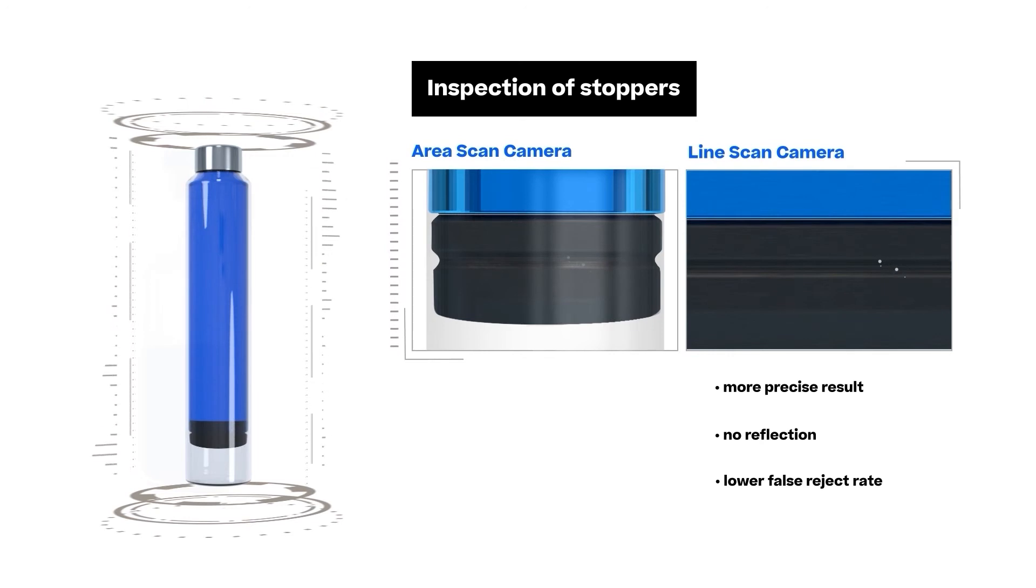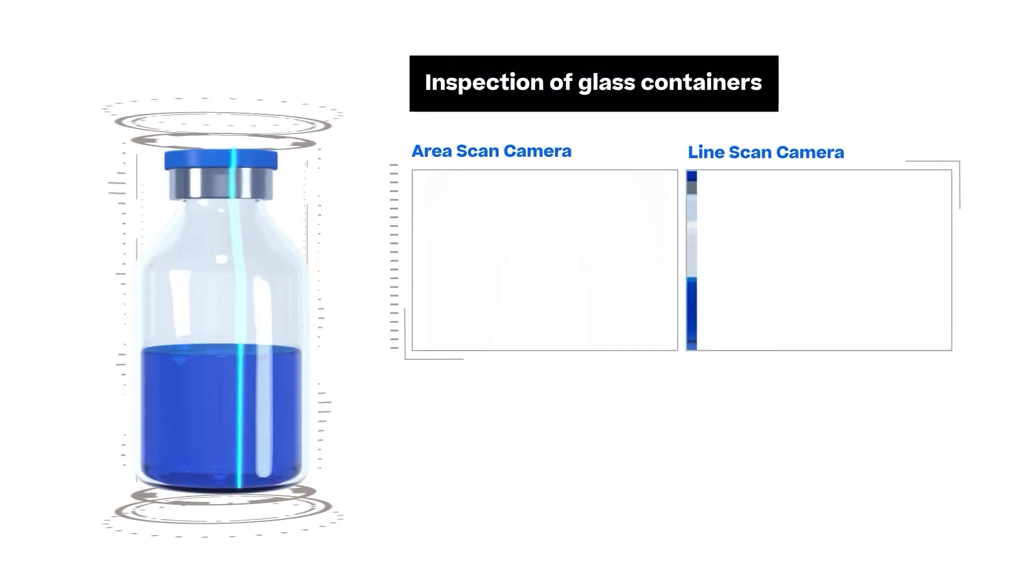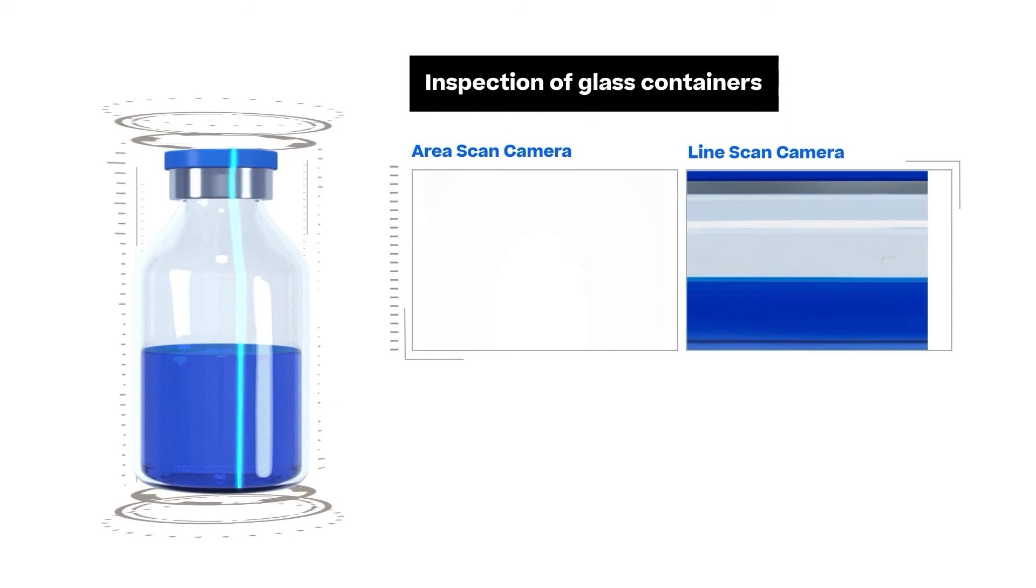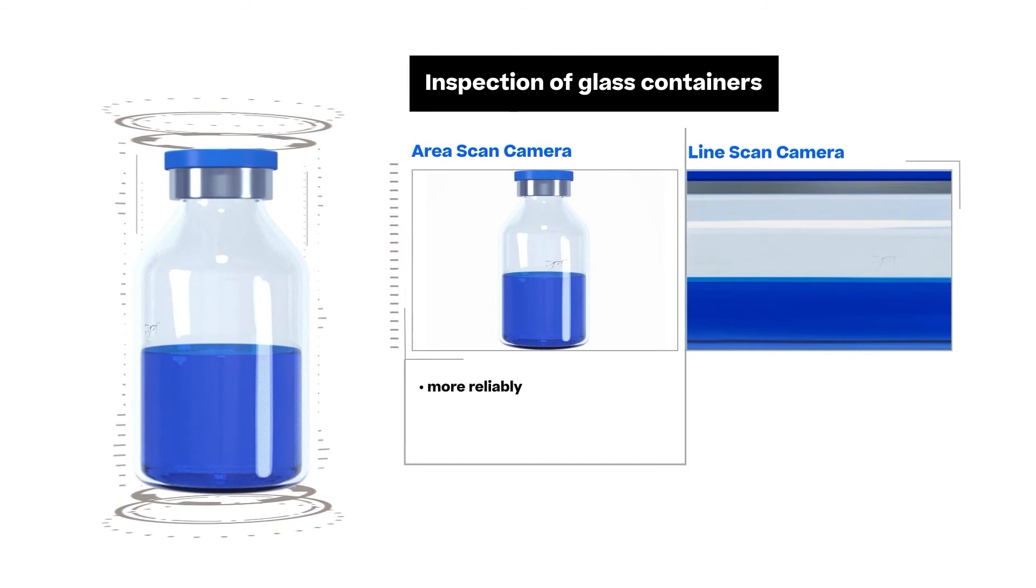When inspecting a glass container for cracks or scratches, such defects are often only visible from certain angles. With an area scan camera, they can be detected more accurately because it captures image sequences of a predefined area from different angles.